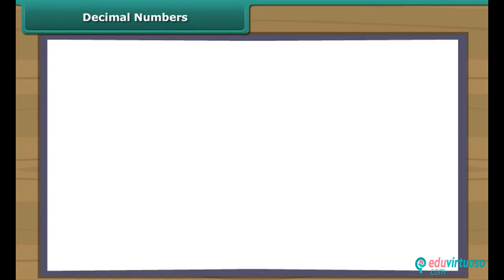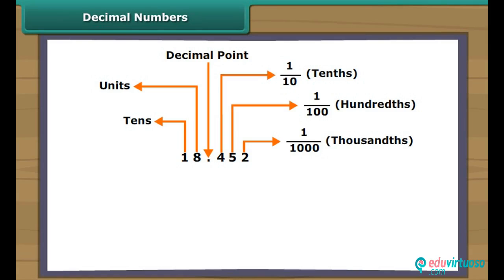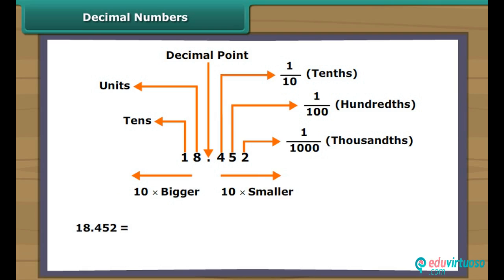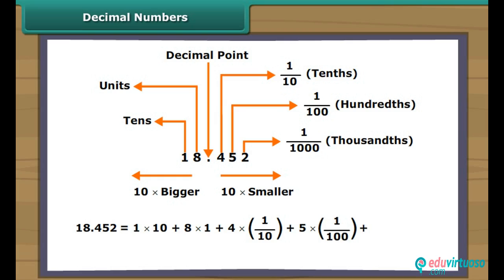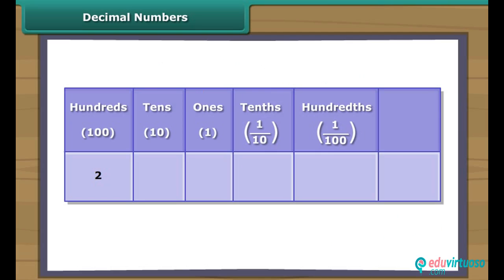Decimal numbers. Friends, look at this number having a decimal point. As we move further left of this number, every number place gets 10 times bigger. As we move further right, every number place gets 10 times smaller. The given number can be written in expanded form as 1×10 + 8×1 + 4×(1/10) + 5×(1/100) + 2×(1/1000). Similarly, if we know the place values of each digit in a decimal number, we can write the number.